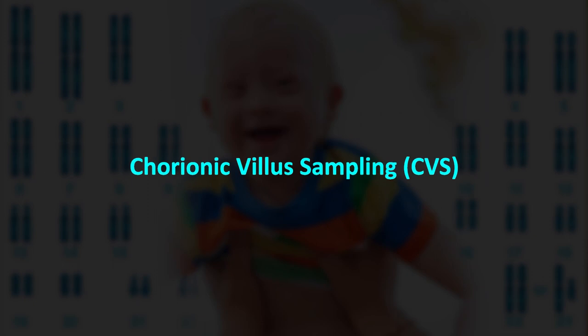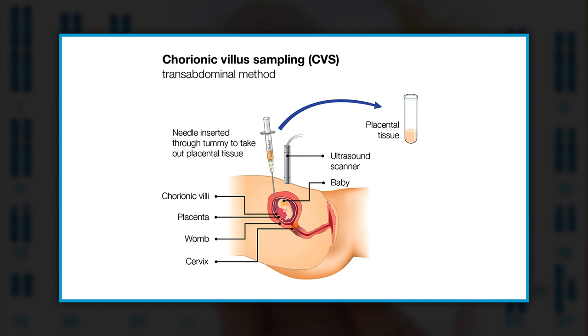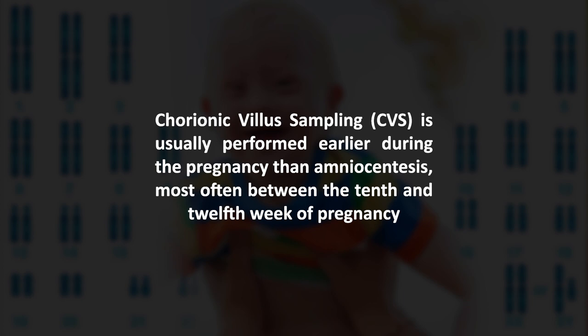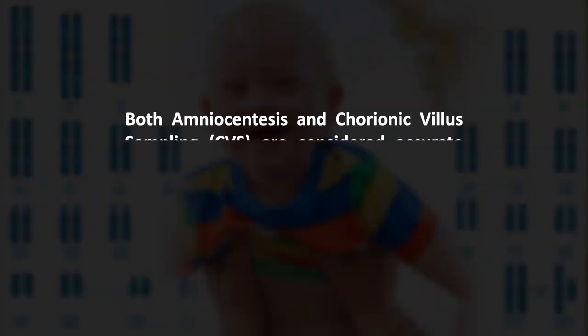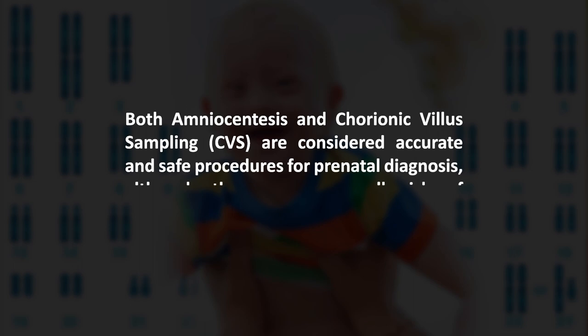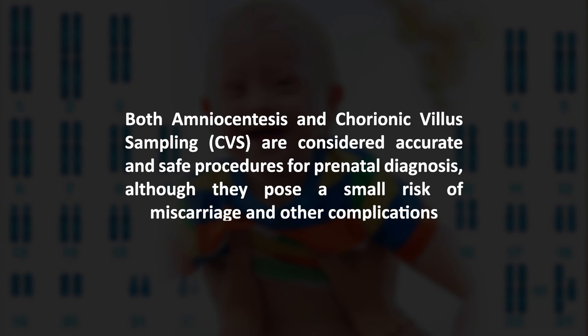With chorionic villus sampling (CVS), a long slender needle is inserted through the abdomen to remove a small sample of cells called chorionic villae from the placenta, or a thin catheter is placed into the vagina and through the cervix to take cells from the placenta. This sample is then analyzed in the laboratory. CVS is usually performed earlier than amniocentesis, most often between the 10th and 12th week of pregnancy, with results available within one to two weeks. Both amniocentesis and CVS are considered accurate and safe procedures, although they pose a small risk of miscarriage.